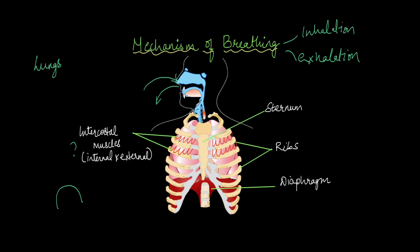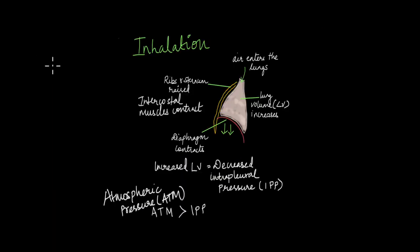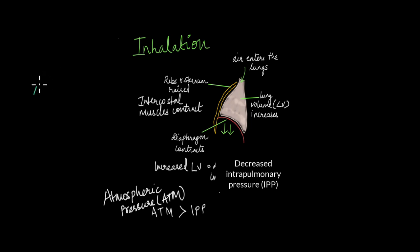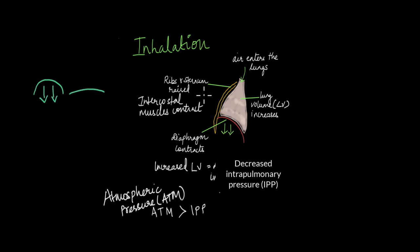How do inhalation and exhalation occur? Starting with inhalation: when the lung is at rest, the diaphragm is in its original dome shape. But when we inhale, the diaphragm contracts and is pulled down, becoming slightly flatter. At the same time, the ribs and sternum are raised up.